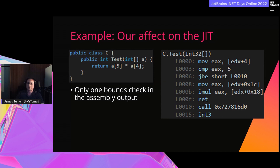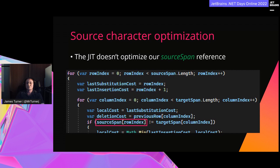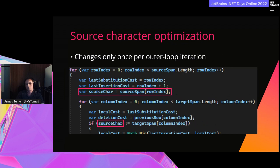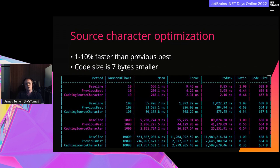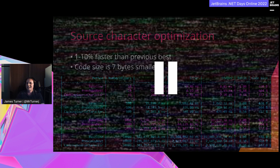Now let's look at our calculation logic to see if we can help the JIT. Our source span reference uses a row index set in the outer loop, but we're accessing it in every iteration of the inner loop. The JIT can struggle to recognize patterns like this. Being mindful of how we write our code, we can give the JIT a hand — all we do is lift that data access to the outer loop. We have effectively the same business logic, just better positioned.